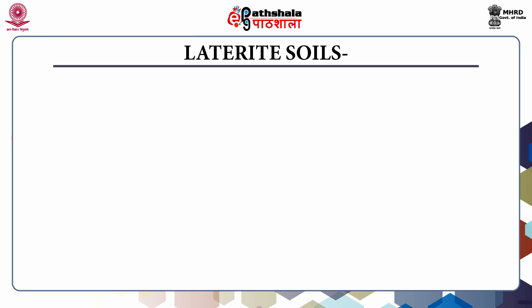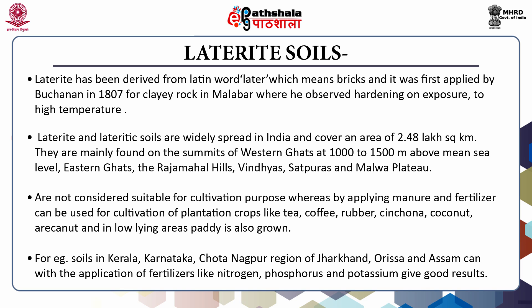Next is laterite soils. The word laterite was first applied by Buchanan in 1810 to a clay rock hardening on exposure observed in Malabar. Many authors agree with the restriction of this term to soils formed with 90 to 100 percent of iron, aluminium, titanium and manganese oxides. Almost all laterite soils are very poor in lime and magnesium and deficient in nitrogen. Sometimes the phosphate content may be high, probably present in the form of iron phosphate, but potash is deficient. Laterite and lateritic soils are widely spread in India and cover an area of 2.48 lakh square kilometers.